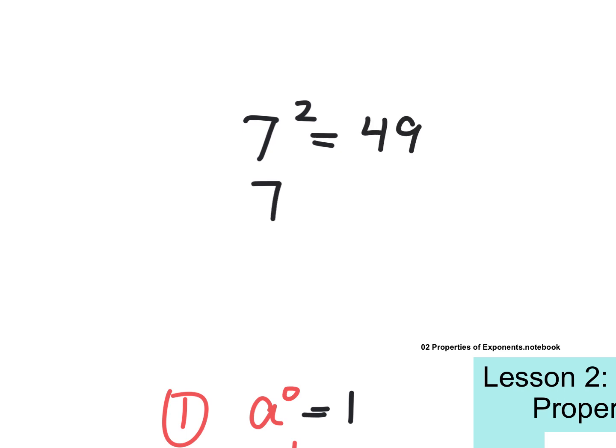What if I said seven to the first power? You'd all know that was just seven, right? What if I go seven to the zero power? Now think about this. The reason it shouldn't be zero is because if you divide this by seven, you get seven. If you divide this by seven, you should get one.